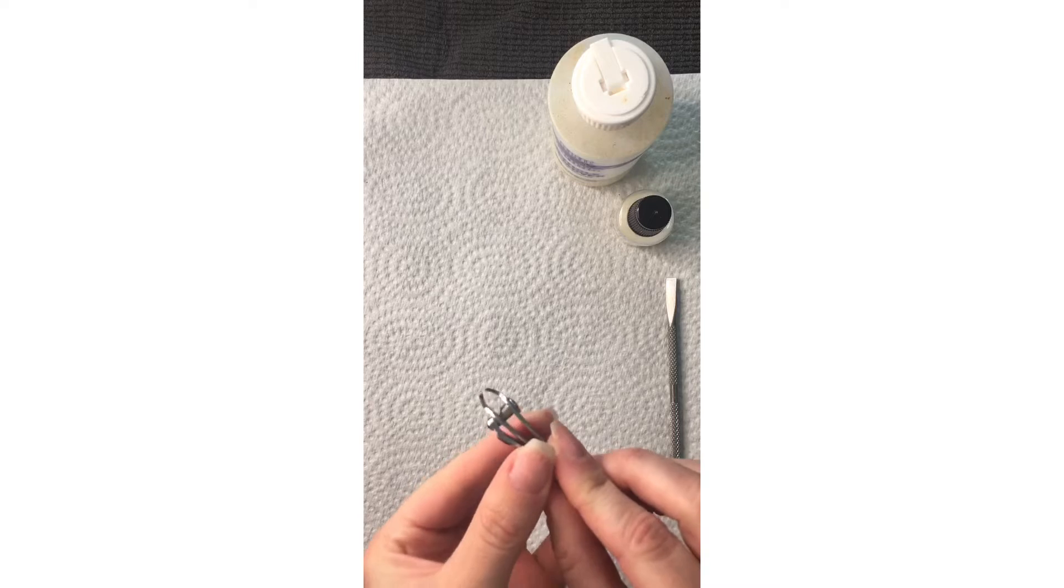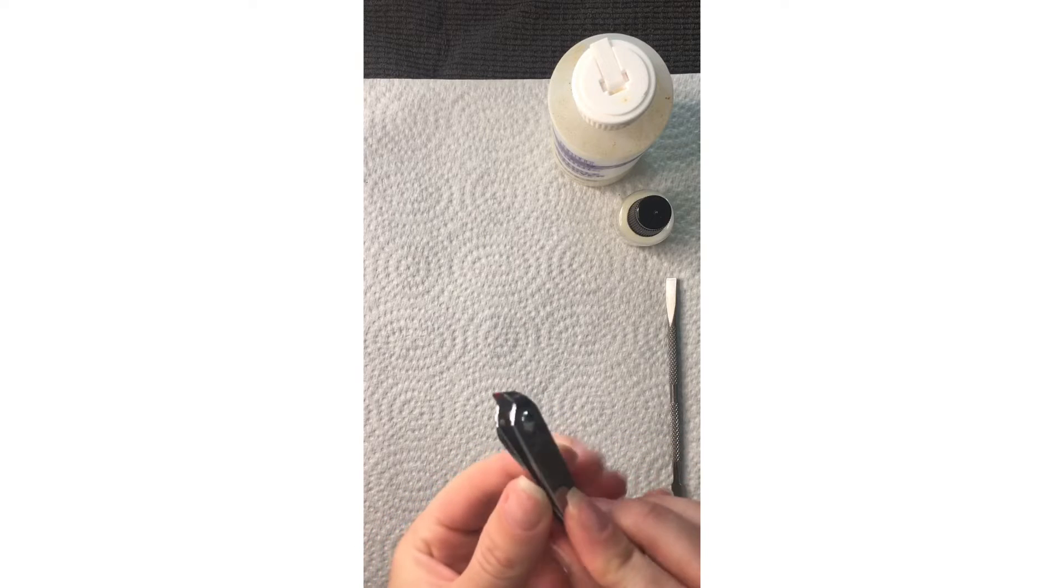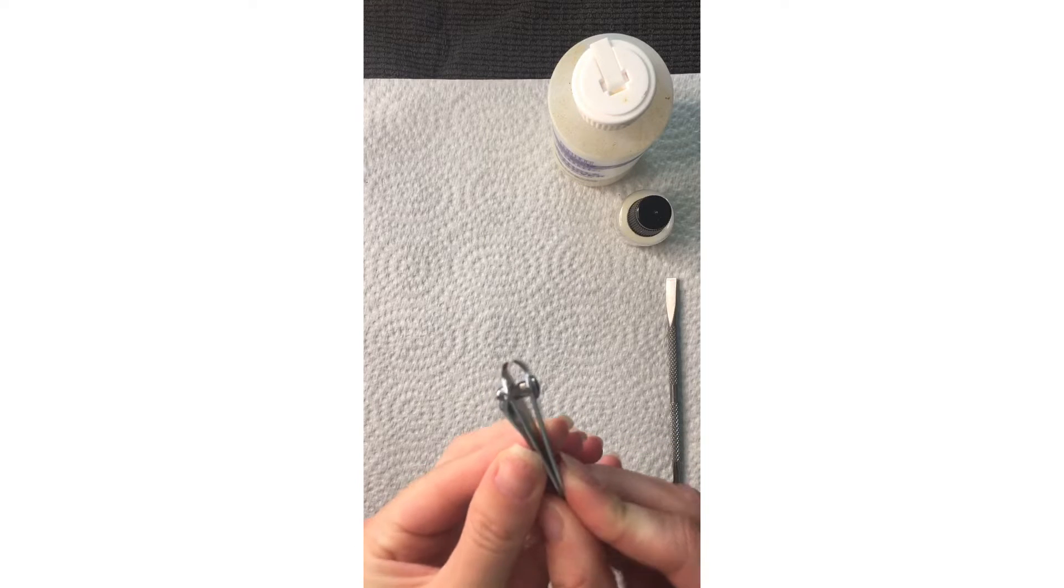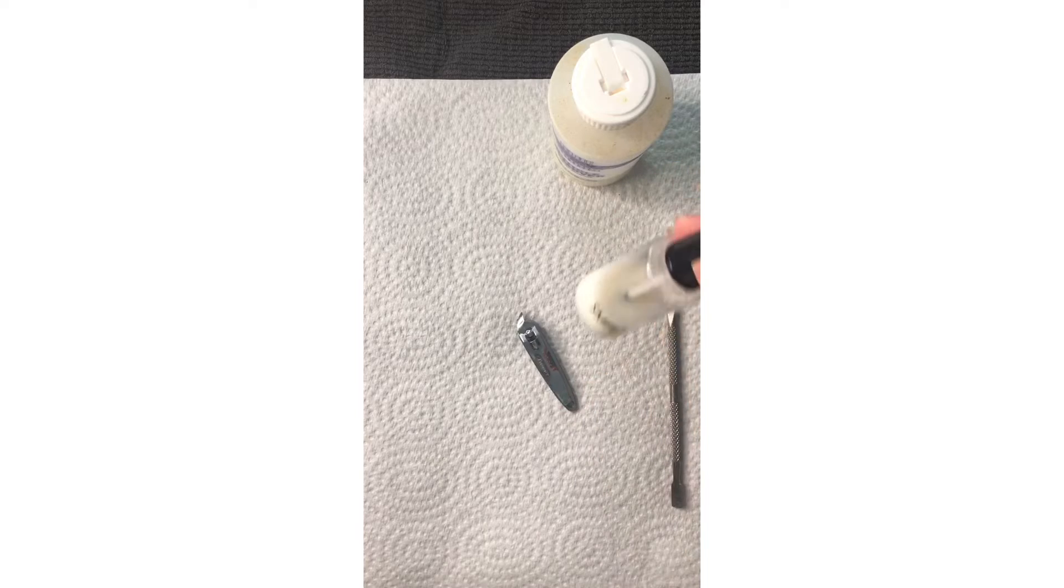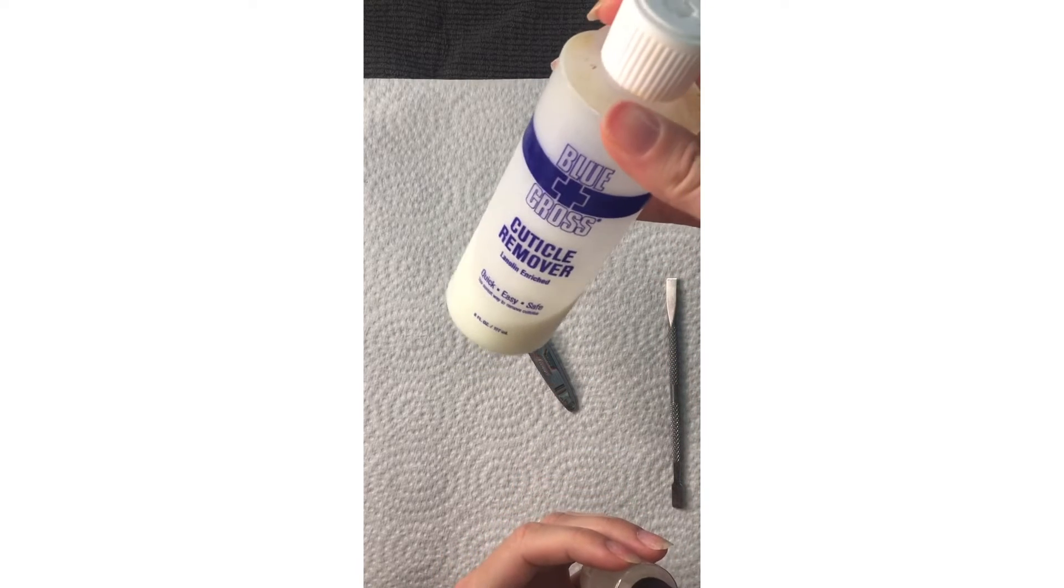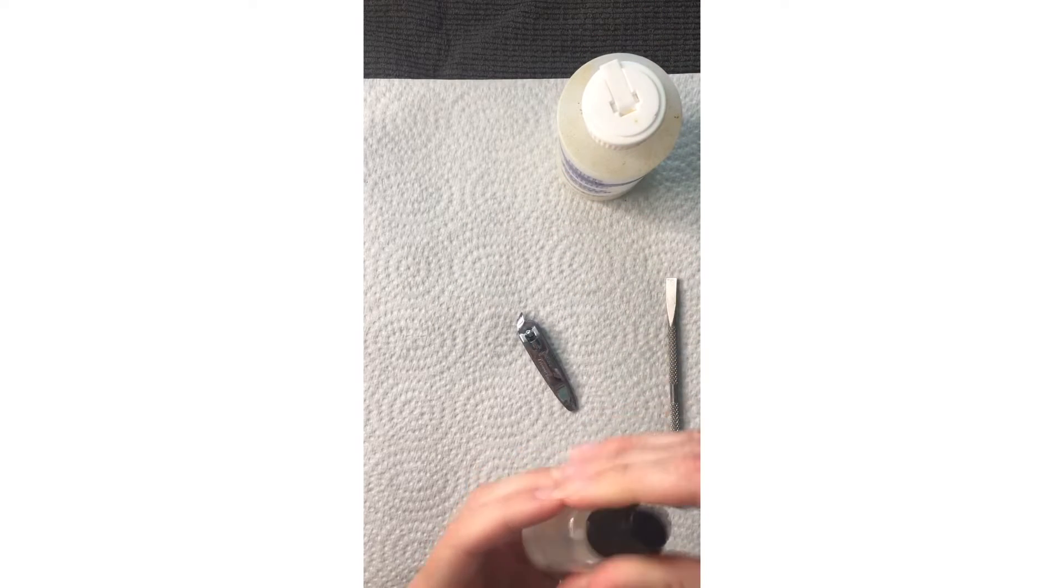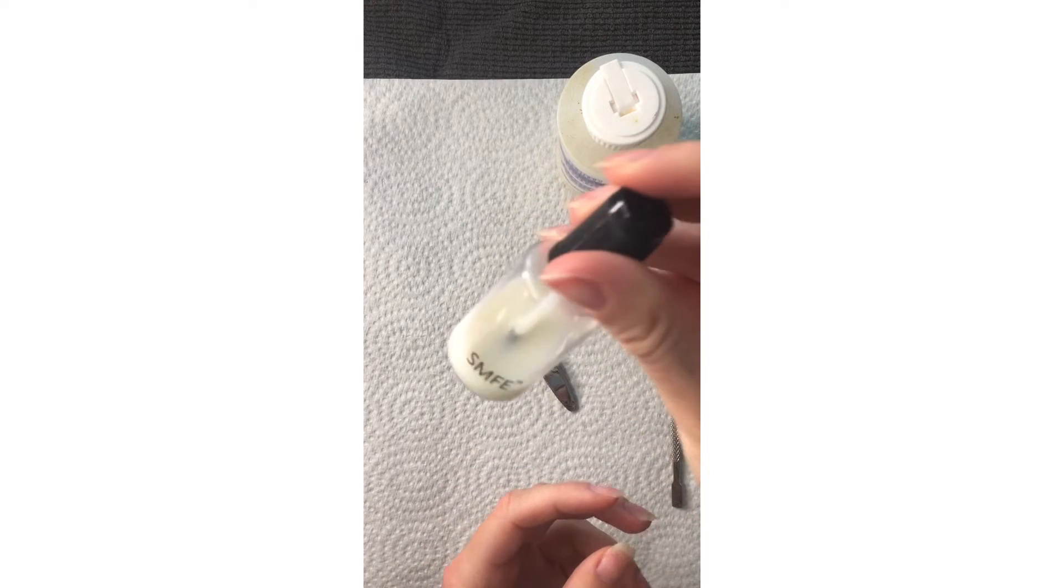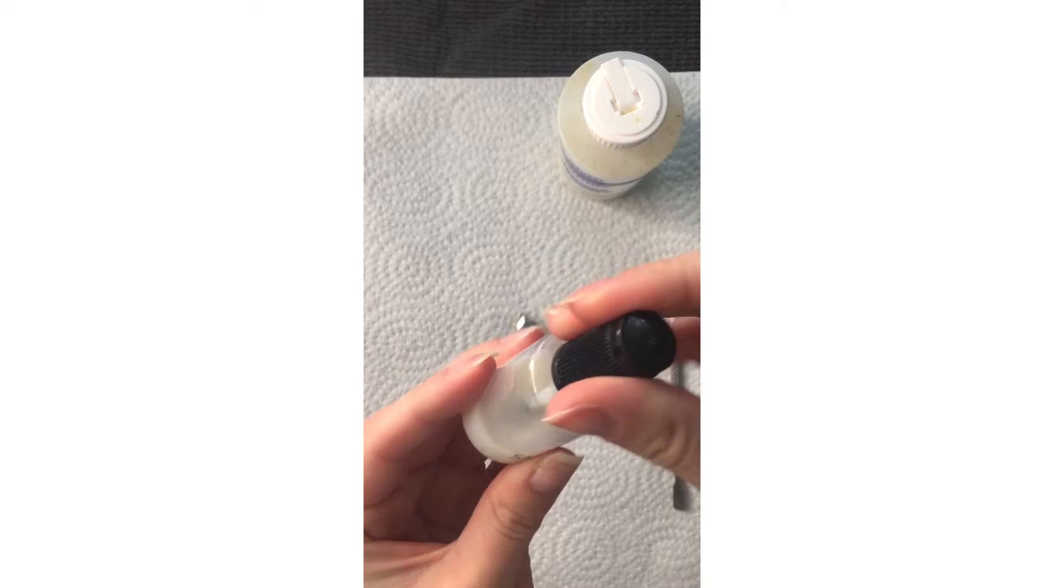I have some little cuticle nippers—these are really handy, I love these. I have my Blue Cross cuticle remover I got on Amazon. It works really well. I have it in my little bottle, almost like a nail polish bottle with a brush.